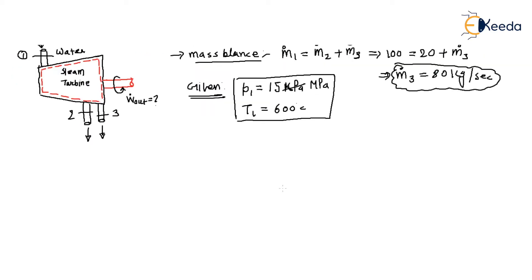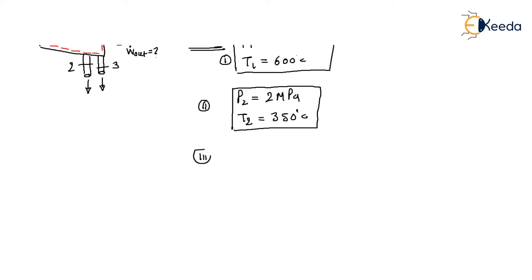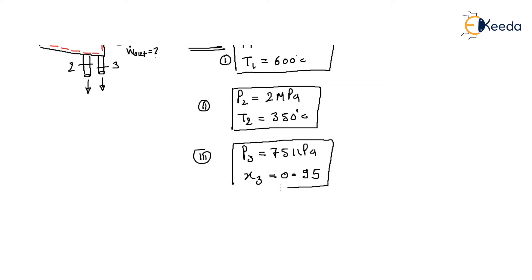The second inlet condition: p2 is 2 megapascal and temperature T2 is 350 degrees centigrade — this is also given. Condition number 3: p3 is given as 75 kilopascal, and the quality x is given as 0.95.